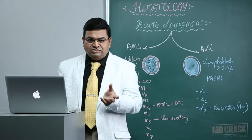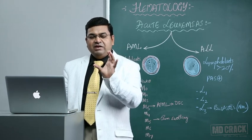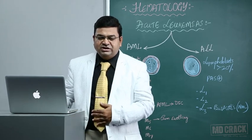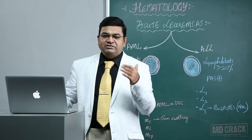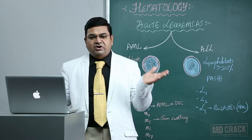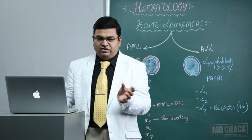AML M3, acute promyelocytic leukemia, is commonly asked in MCQs. The promyelocytes contain plenty of cytoplasmic granules that can rupture at any time and have procoagulant activity. Therefore, patients with AML M3 can present with disseminated intravascular coagulation (DIC) — thrombosis, hemorrhage — and even organ failure. DIC is very commonly seen in AML M3.